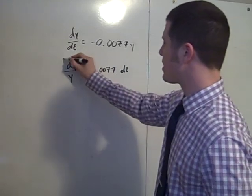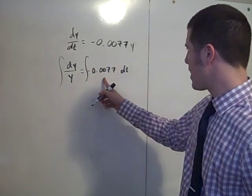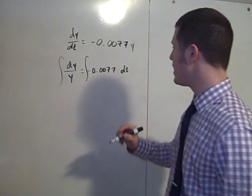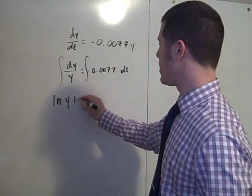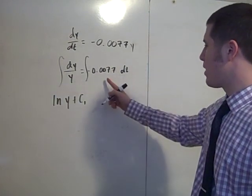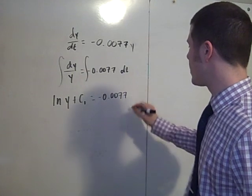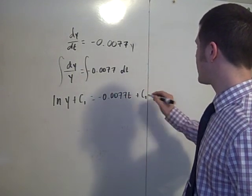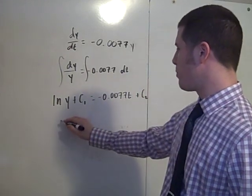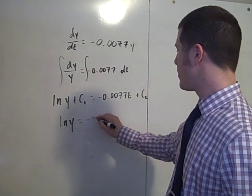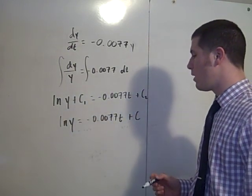We then integrate both sides with respect to the variable that's there. So we're integrating this side with respect to y, integrating this side with respect to t. The integral of dy/y is the natural log of y plus some constant I'll call c1. And the integral of negative 0.0077 dt is negative 0.0077t plus some other constant c2. And really we can just subtract c1 from both sides to say that the natural log of y is negative 0.0077t plus just some constant here.